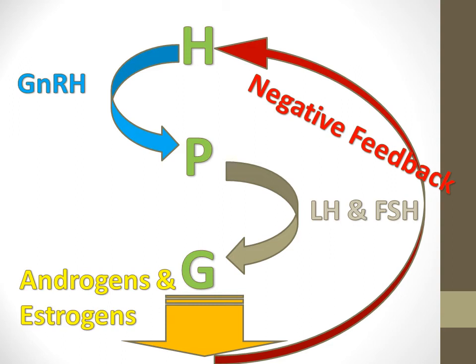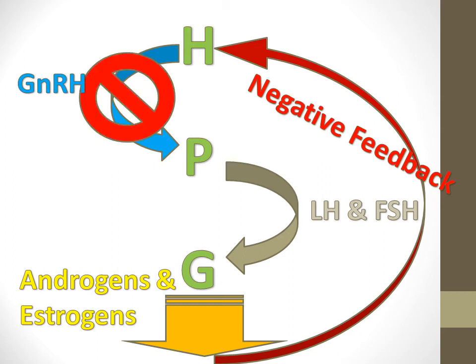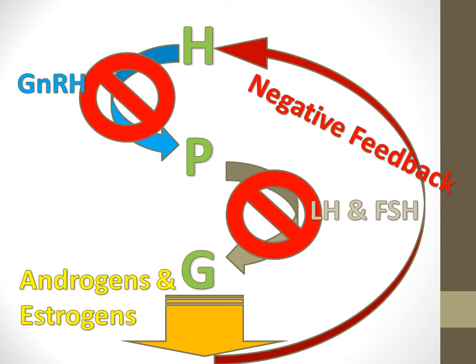Those androgens and/or estrogens are going to do a negative feedback loop back up to the hypothalamus. With the negative feedback loop, that's going to tell the hypothalamus to stop producing GnRH — we don't need any more of that. Subsequently, the pituitary is going to stop or reduce its secretion of LH and FSH. And then that's going to go back to the gonads and reduce or stop the production of androgens and estrogens.